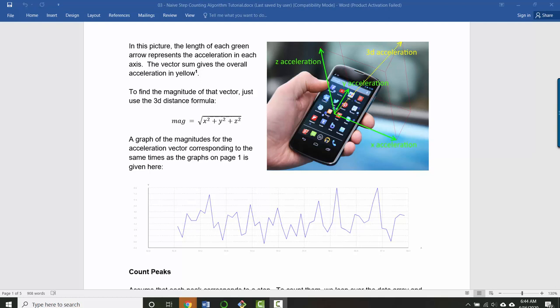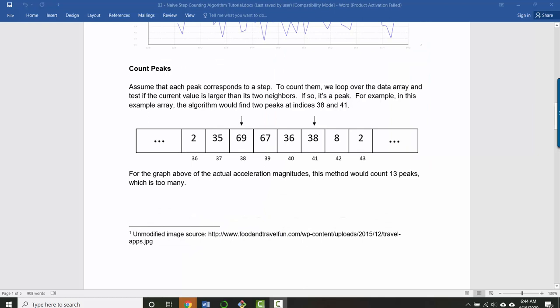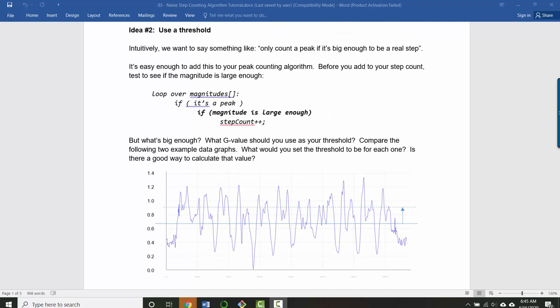We're already doing this. We're counting peaks where a peak is defined as a value that is larger than its adjacent two values in the time series data. But we also want to use a threshold because we only want to count a peak as a step if it's large enough that we feel confident that it really is a step.